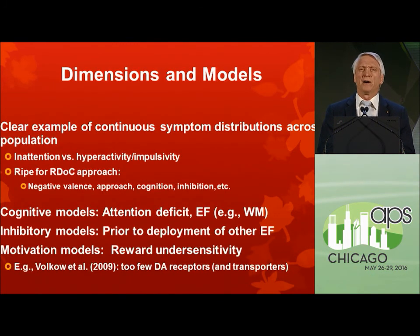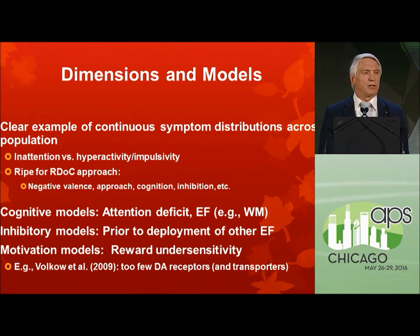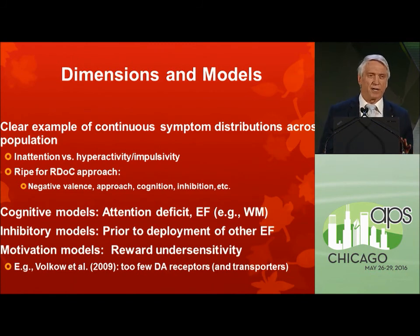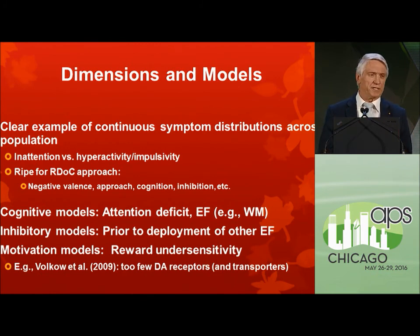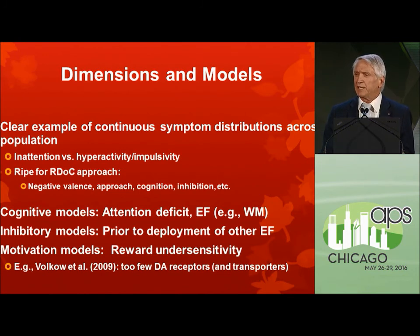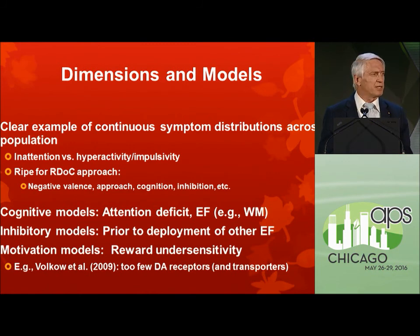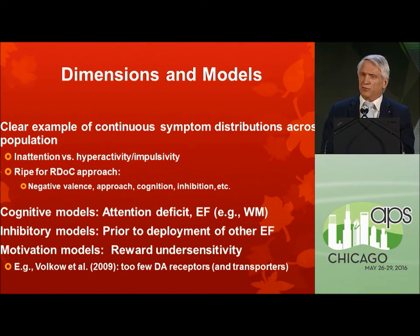What's going on in the minds and brains of people who get diagnosed? ADHD is clearly a continuously distributed set of traits — it's right for the RDoC approach. If RDoC was going to target anything on a dimension rather than a priori categories, ADHD would be a classic example. Is it really an attention deficit or a wider set of deficits in executive functions like working memory? Russ Barkley's influential model from 19 years ago contends that the core is poor response inhibition — if you don't do that well, you never get a chance to enact the other executive functions.